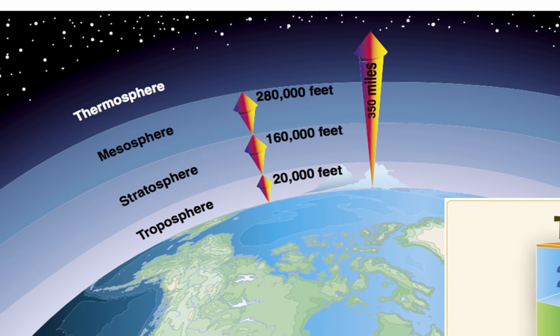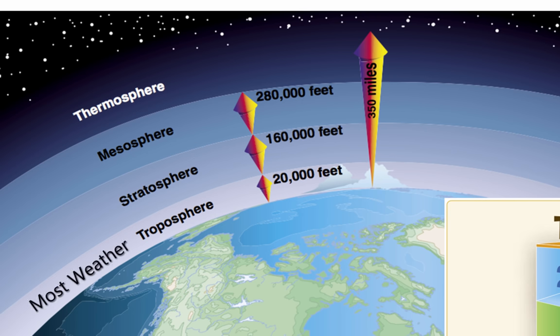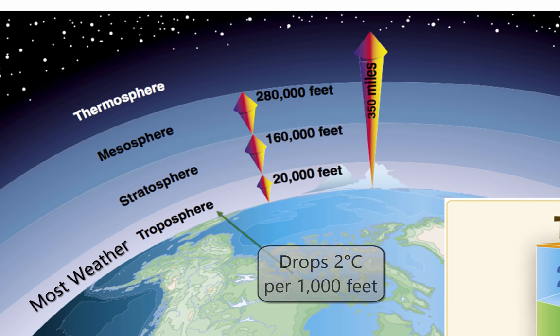The atmosphere is made up of four distinct layers that extend up to 350 miles from the Earth's surface. The first layer is the troposphere, which extends from the surface to 20,000 feet over the poles and 48,000 feet over the equator regions. Most weather happens in this region, and the temperature drops by 2 degrees Celsius for every 1,000 feet of altitude gain. The pressure also drops by an inch for every 1,000 feet of altitude gained.